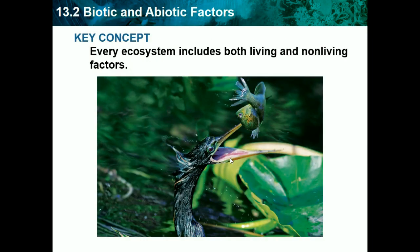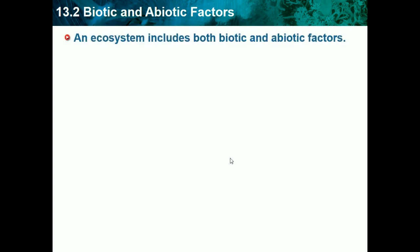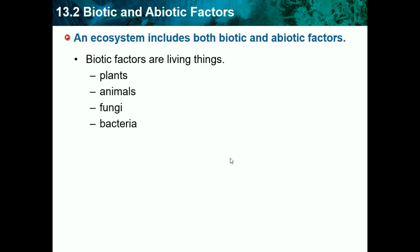Section 13.2: Biotic and Abiotic Factors. The key concept is that every ecosystem includes both living and non-living factors. An ecosystem includes both biotic and abiotic factors. A biotic factor is something that is living — a tree, an animal, a bird, a cat, a dog — anything. So plants, animals, fungi, and bacteria are all biotic factors.